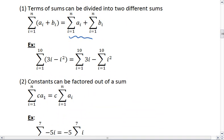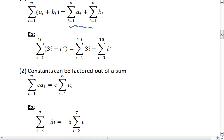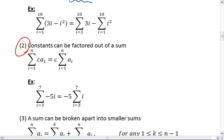Now let's look at another property. Constants can be factored out of a sum. So if I have some constant times the term, I can pull that constant out front and just multiply the final sum by that constant number.